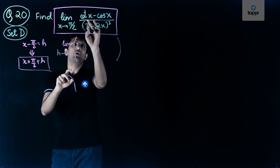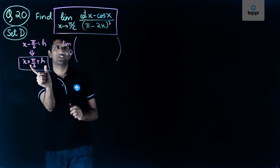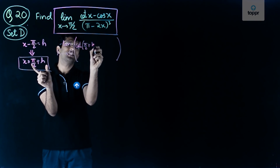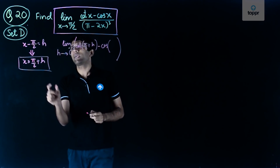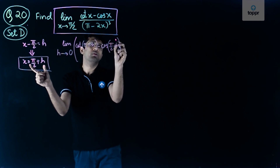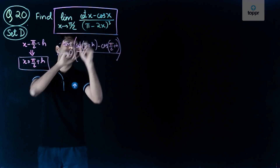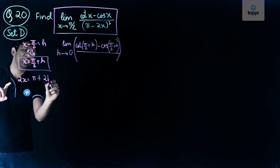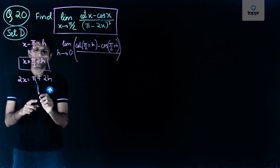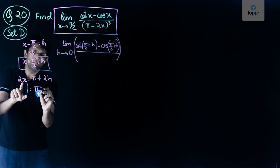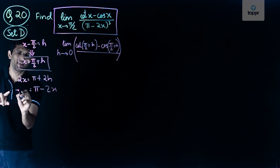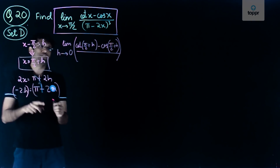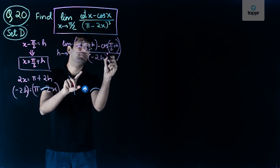We continue and write this as limit as h tends to 0. In the numerator we have cot of x minus cos of x, replacing x by pi by 2 plus h — so we get cot of (pi by 2 + h) minus cos of (pi by 2 + h). In the denominator, pi minus 2x becomes minus 2h, so the denominator is (minus 2h) cubed, which is minus 8h cubed.